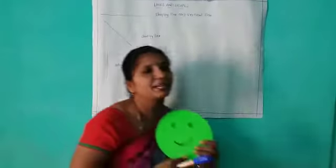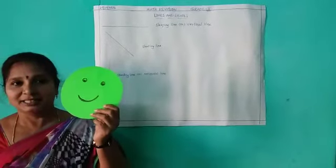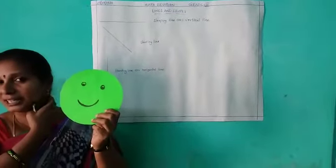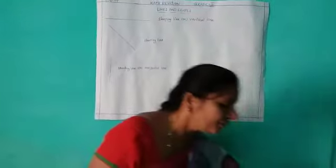Next, circle. Give example for circle. See, bangle. Bangle is in a circle shape. And you will play ring toss, right? That one is also in a circle shape.